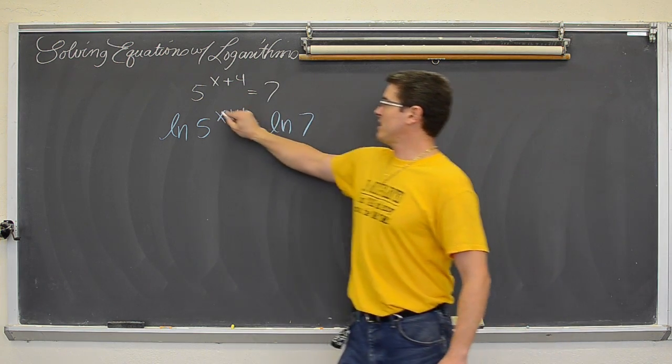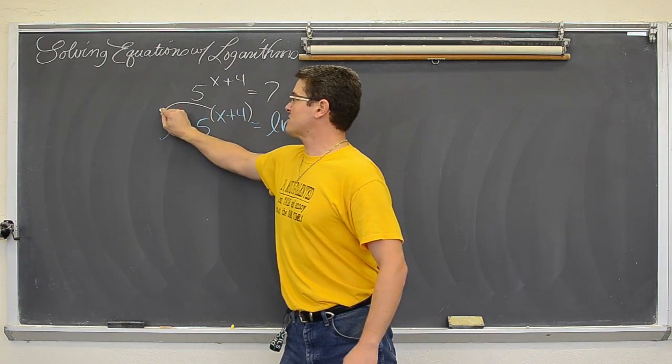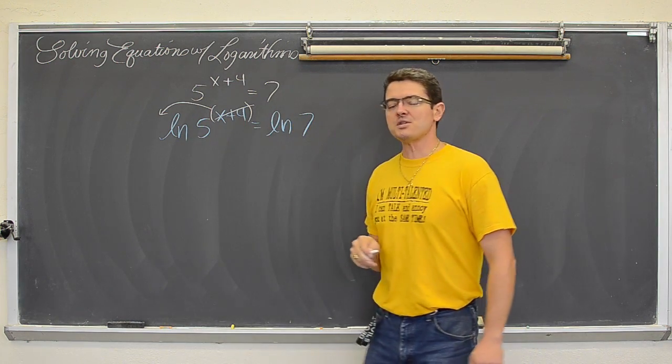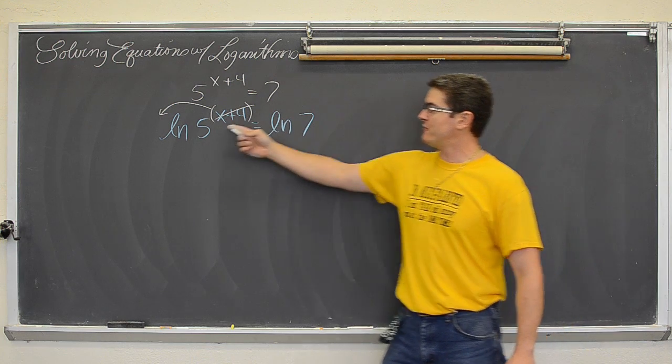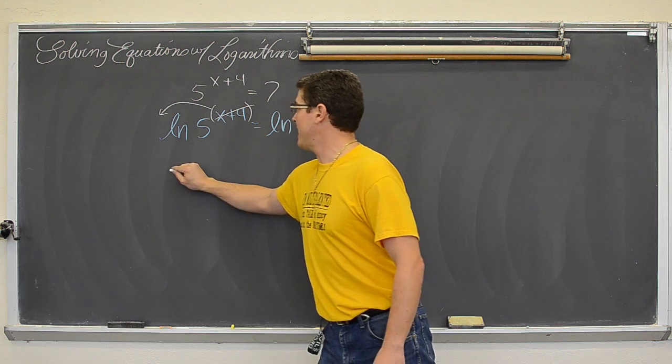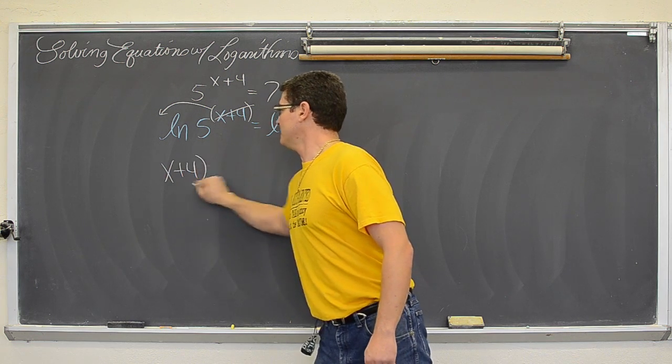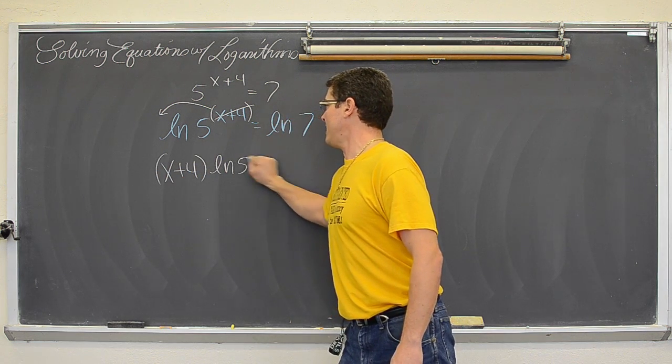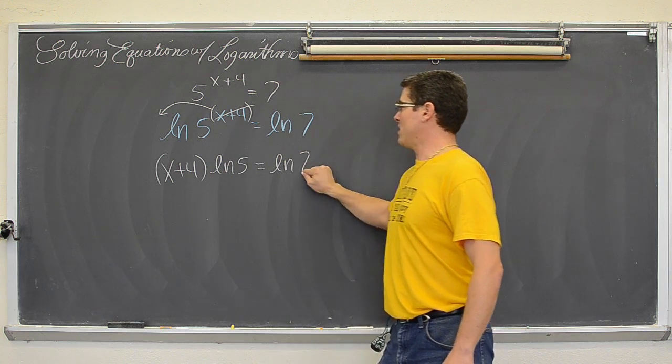Again, we are doing this so that we can use the power properties of logarithms that will allow us to take that exponent off of the 5, which is where my variable is, and move it down to the mainline of the problem. So we have (x plus 4) times the natural log of 5 equals the natural log of 7.